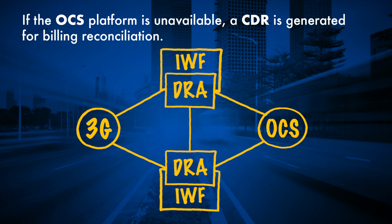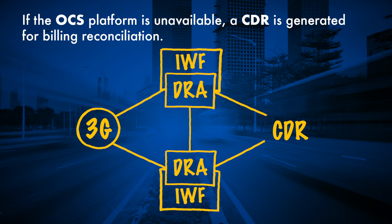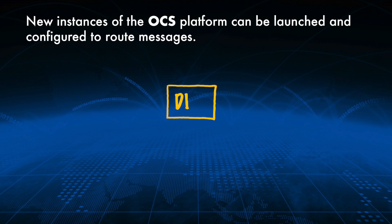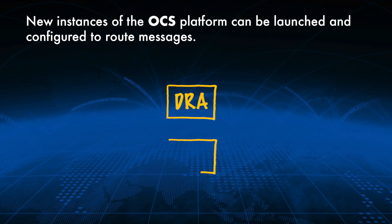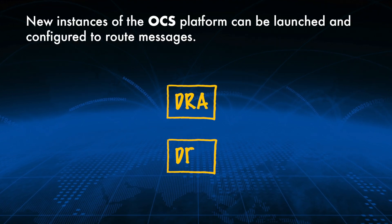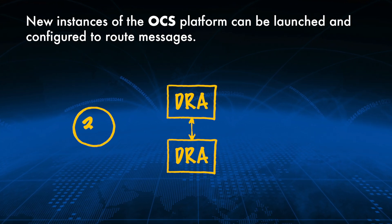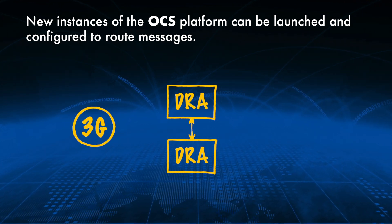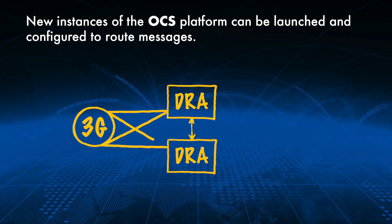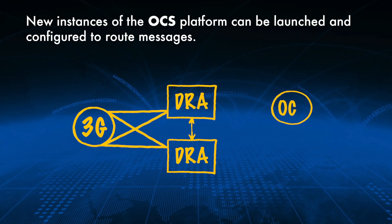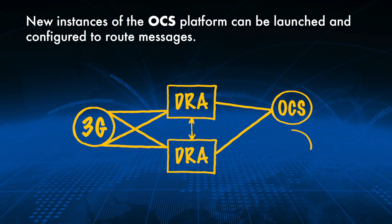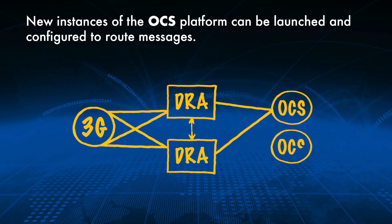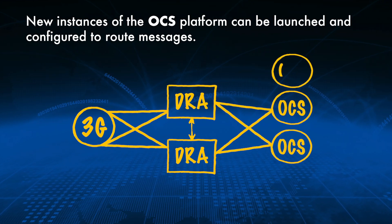If the OCS platform is unavailable, access would be granted and a CDR is generated for billing reconciliation. As network demand increases, an operator will want to launch new instances of the OCS platform. Each OCS will be configured to point its Diameter interface at the pair of DRAs, which will automatically route messages to and from the appropriate OCS.